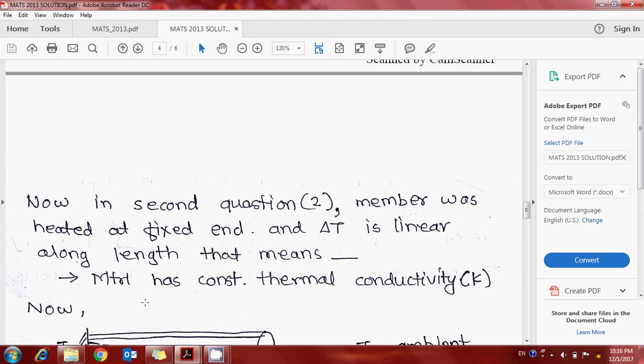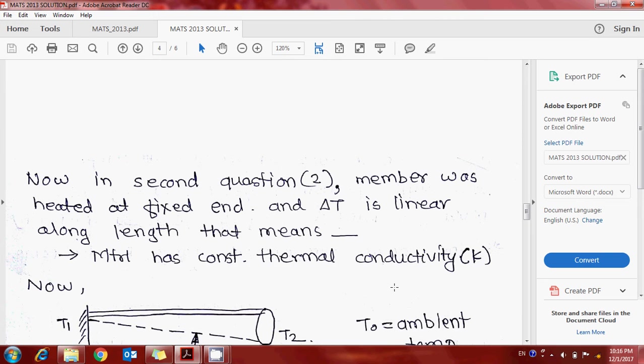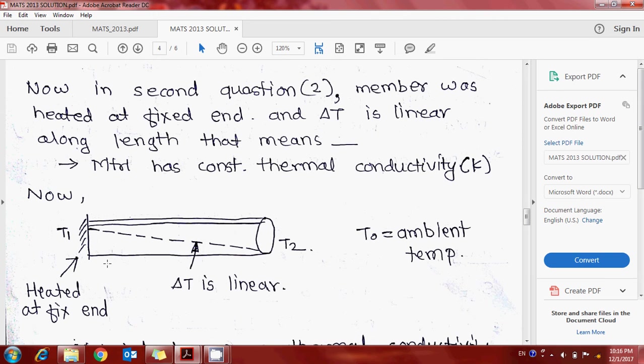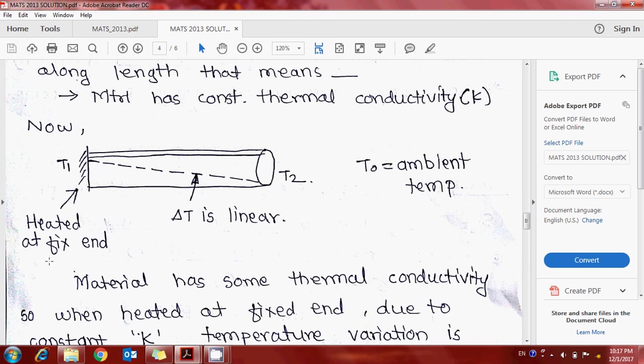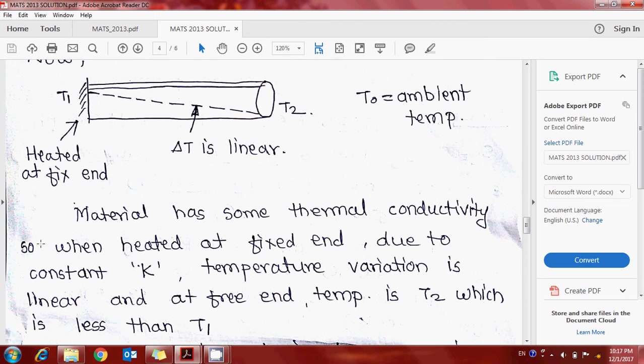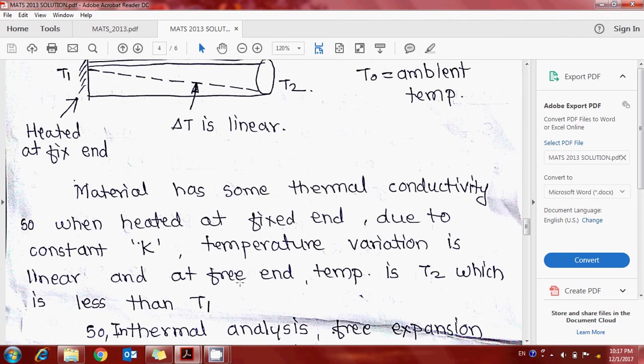Now in the second question, the member was heated at the fixed end and delta T is linear along the length. That means the material has constant thermal conductivity K. Now consider a member where T1 is the temperature at the fixed end and T2 is the temperature at the free end. Delta T is linear, T0 is ambient temperature, and the fixed region is heated at constant temperature T1.